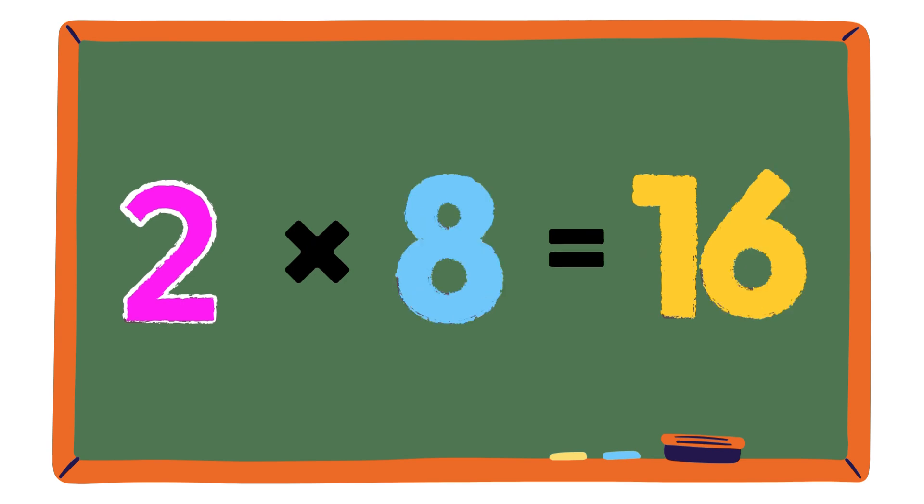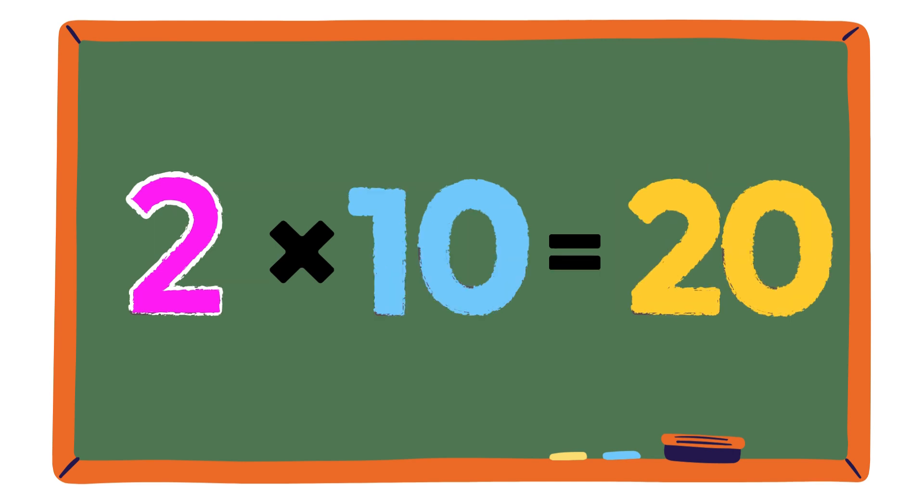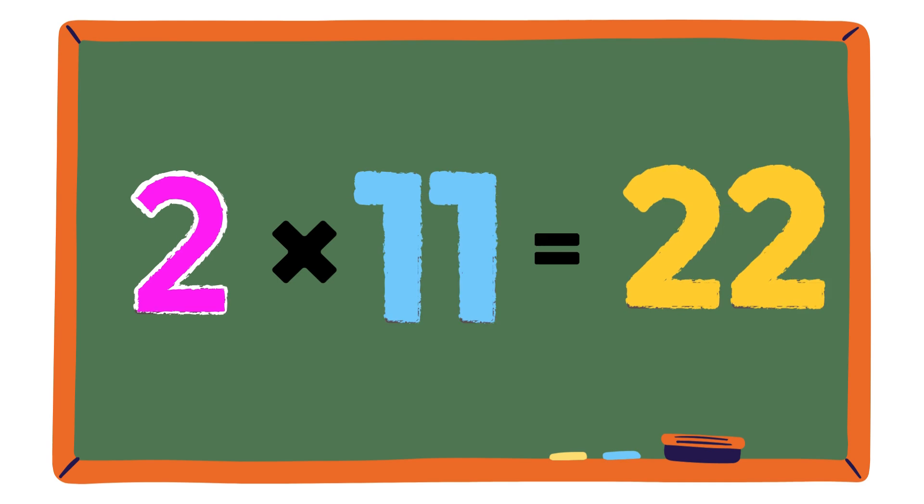Let's go! 2 times 8 is 16, don't you know. 2 times 9 is 18, almost there. 2 times 10 is 20, everywhere. 2 times 11 is 22.